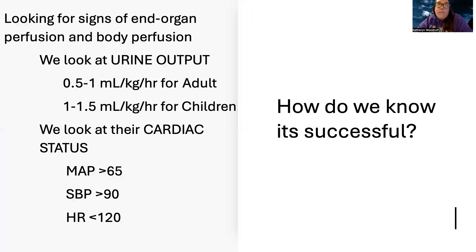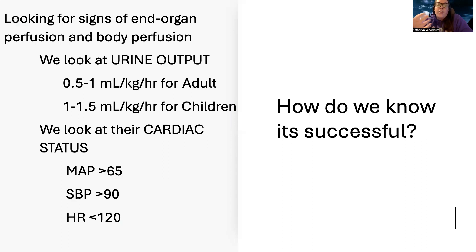We know fluid resuscitation is successful when they're showing signs of good perfusion to their organs — we call this end organ perfusion. We look at that mostly through urine output: for adults, 0.5 to 1 mL/kg/hour; for children, 1 to 1.5 mL/kg/hour. We can also look at cardiac status: MAP greater than 65, systolic above 90, heart rate less than 120. These all show they're getting better hydration. Numbers aren't perfect — we have to look at the whole clinical picture.